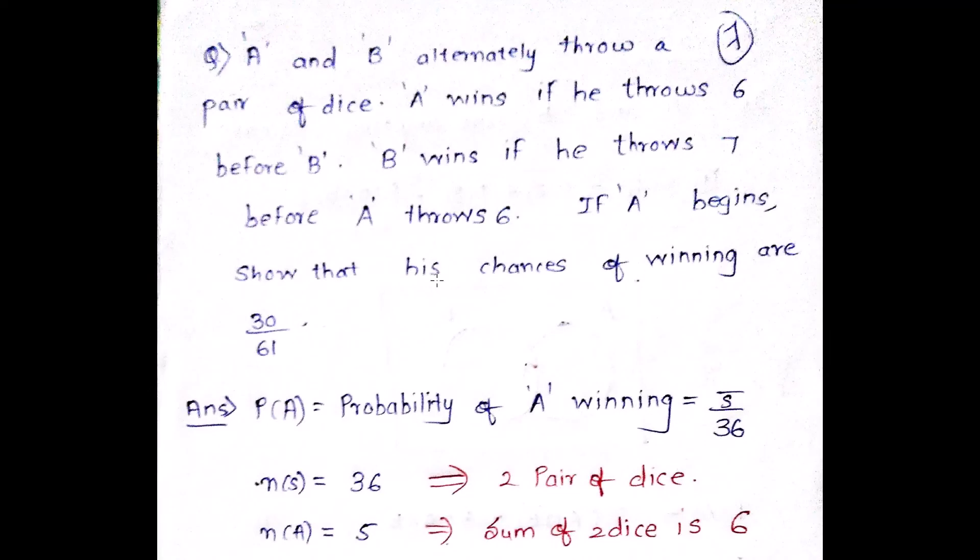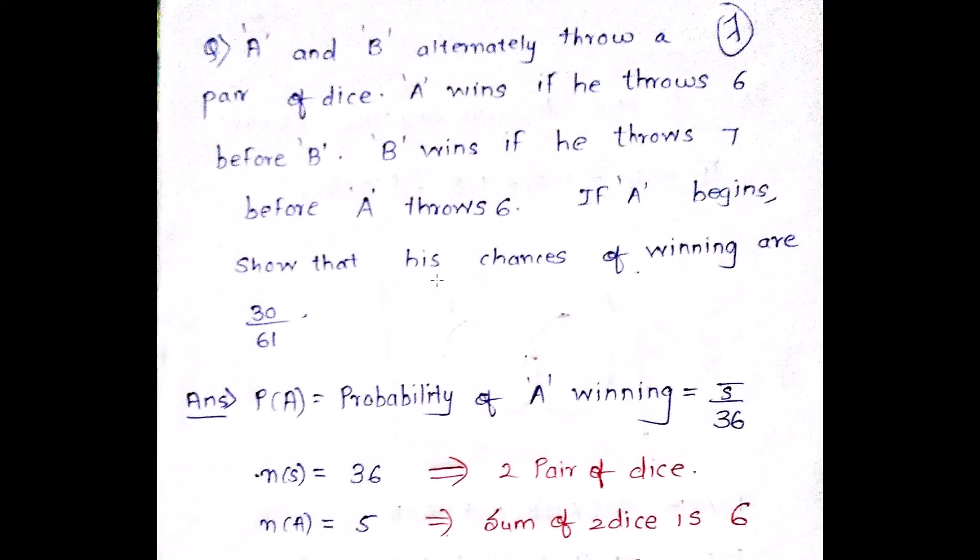So now we have a numerical. We will try to understand this numerical and solve it. Basically this does not include any kind of formulas, but it includes some logic and basic concepts of probability. So let's try to understand. The question says A and B alternately throw a pair of dice.